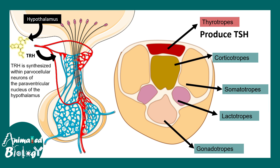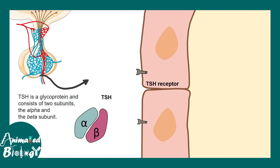The thyrotrophs are the key cells on which the TRH hormone works, and this is the cell type that produces TSH. TRH stimulates the production of TSH from the anterior pituitary. Once TSH is produced, it would bind to the TSH receptors on the thyroid follicular cells — it gets secreted into the blood and reaches the thyroid gland.